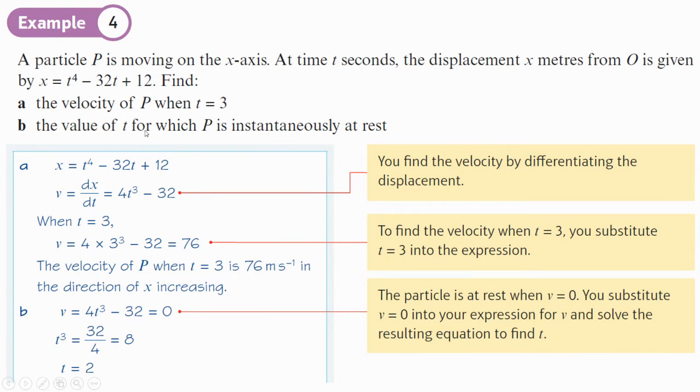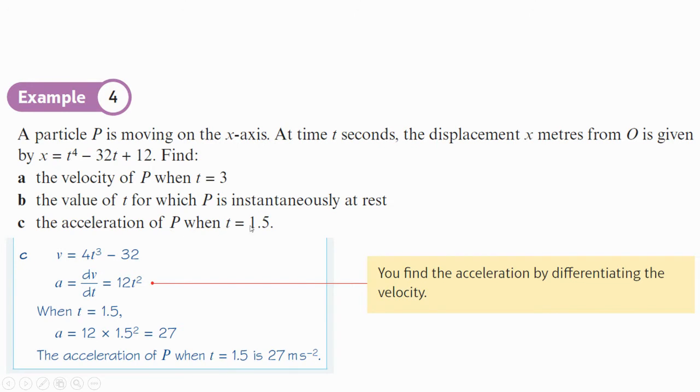The next part is asking you the value of t for which P is instantaneously at rest. So, that basically means when it's stopped, when the velocity is 0. So, we've got a velocity function. We equate it to 0. And then we just solve for t. So, if this is rearranged by adding 32 to both sides, divided by 4, and then cube root, you're going to get that t equals 2. Solving this cubic, even though it's an easy one, you could just type that into your polynomial solver on your calculator, and that would give you the answer.